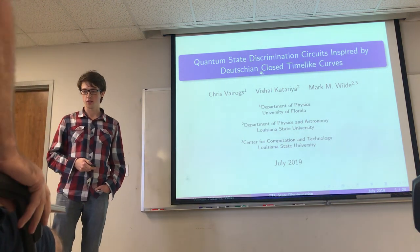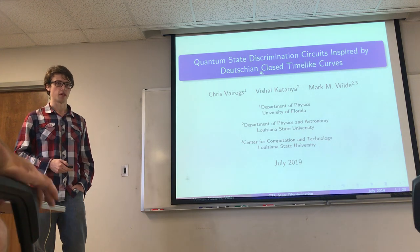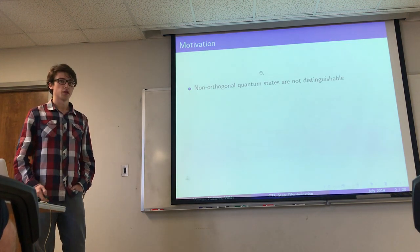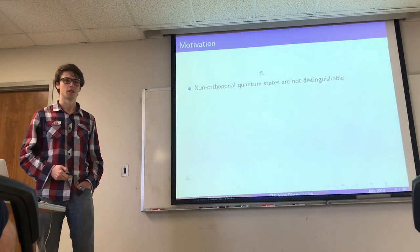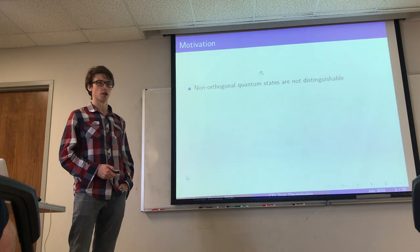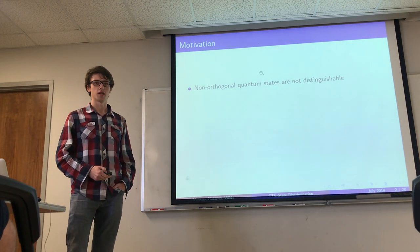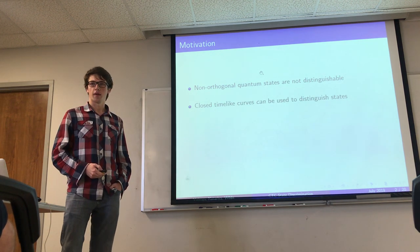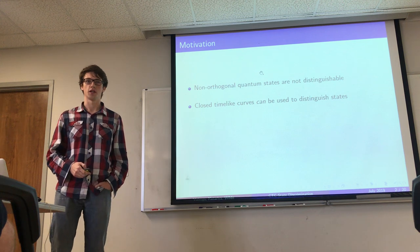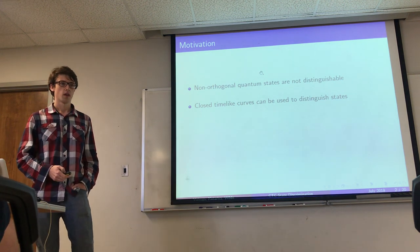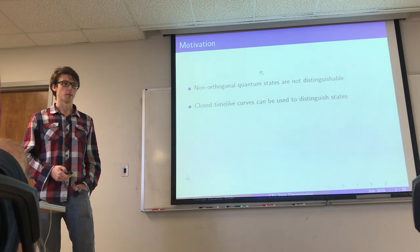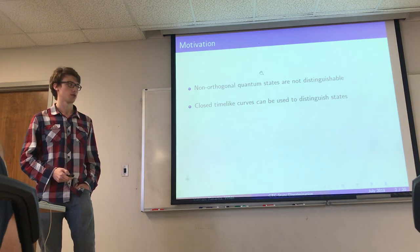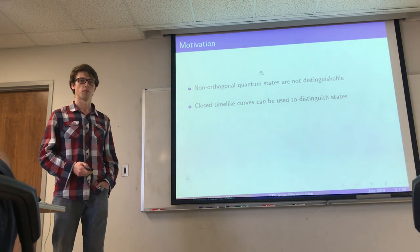This project deals with closed timelike curves as a method for practical state discrimination. It is a fundamental result of quantum mechanics that non-orthogonal quantum states cannot be distinguished perfectly. However, closed timelike curves — objects studied in general relativity — have many interesting applications to quantum information theory, one of them being that you can distinguish non-orthogonal quantum states perfectly.